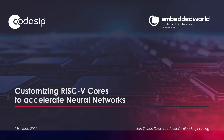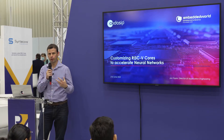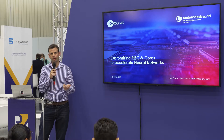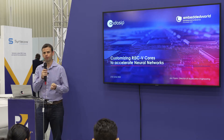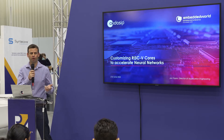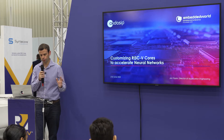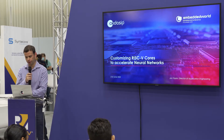Good morning everyone and welcome to this session on accelerating neural networks with customized RISC-V cores. My name is John Taylor and I lead the application engineering team at Codasip. I'm going to talk you through how we've done a proof of concept using our L31 embedded core and accelerated the MNIST image recognition algorithm using a couple of simple instructions to achieve a very significant performance improvement, and talk about why you might be interested in that and how our technology helps you do that.